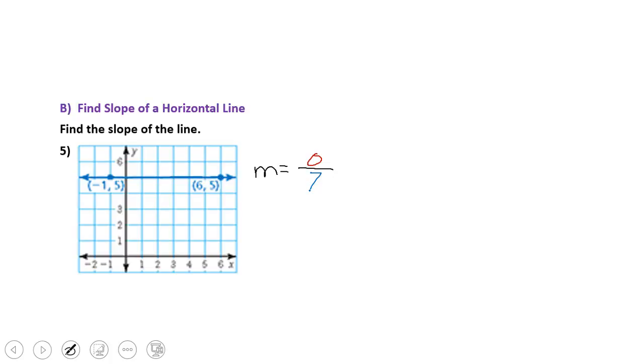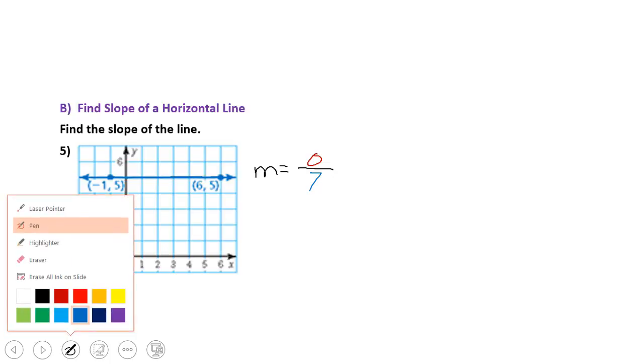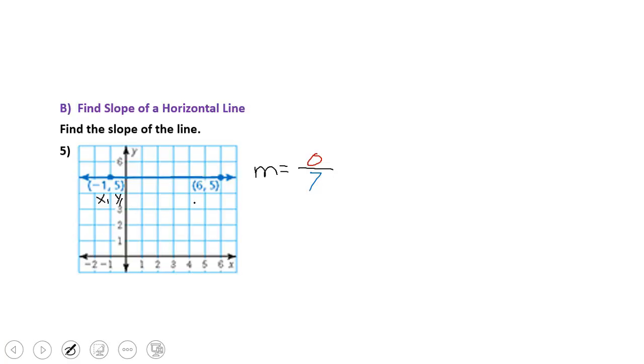I have 7 that I'm going over to the right. Let's calculate that mathematically and see if it comes out to be the same. So I'm going to label my points x1, y1, x2, y2. Using my slope formula, y2 minus y1 over x2 minus x1, I can plug in the numbers: 5 minus 5 over 6 minus negative 1. When I calculate that, 5 minus 5 is 0 and 6 minus negative 1 is 7.